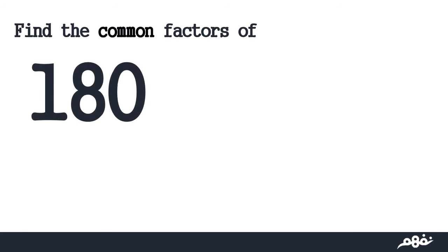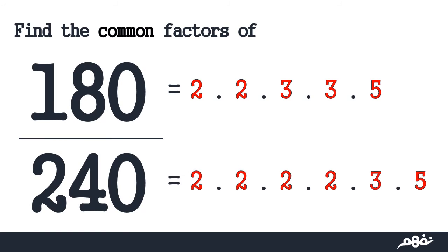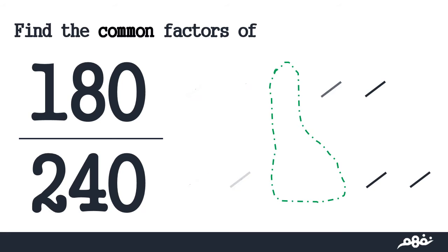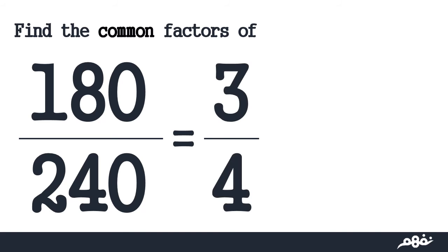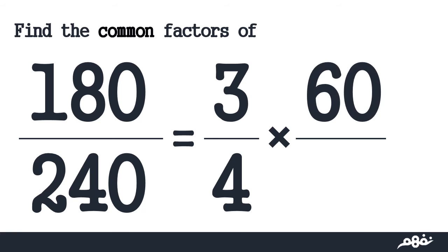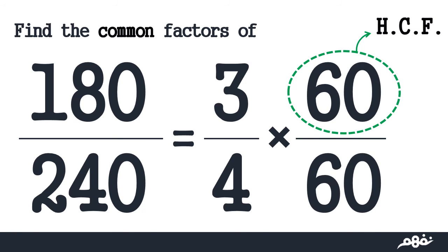The new thing is: find the common factors of 180 and 240 together. You know that 180 and 240 have prime factors, so you start cancelling out the similar prime factors in both cases — like 2, and 2, and 3, and 5. The remainder is 3 and 4, so 180 over 240 equals 3 over 4, multiplied by 60 over 60, which equals 1. So 60 is called the HCF, or the highest common factor.